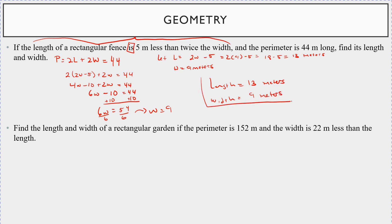We got it! Let's try another one: find the length and width of a rectangular garden if the perimeter is 152 meters and the width is 22 meters less than the length. So the perimeter is 2L + 2W = 152. The width equals the length minus 22.